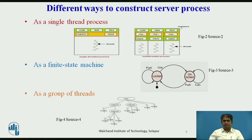Otherwise, the file server sends a disk access request to the disk server and waits for a reply. After receiving the disk server's reply, it services the client request, sends the reply to the client process, and goes back to get the next request from the request queue. The programming of the server process is simple because of the use of the blocking system call. After sending its request, the file server blocks until a reply is received from the disk server. However, if a dedicated machine is used for the file server, the CPU remains idle while the file server is waiting for a reply.